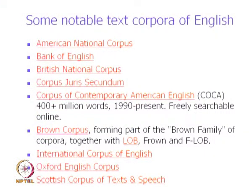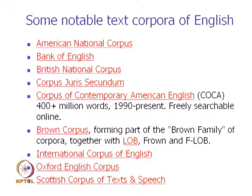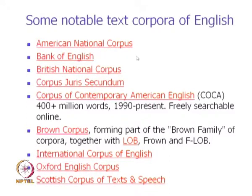We have seen that part of speech tagging is done through annotated corpora. Annotated text corpora are those which have annotations in them. In particular, for part of speech tagging, we have corpora which are tagged with part of speech — for example, noun, verb, adjective and so on. Some important text corpora for English include the American National Corpus and British National Corpus, which are extremely large corpora with lots of text from different domains tagged with part of speech. Bank of English is from the financial domain.